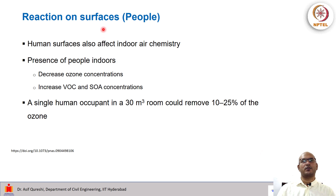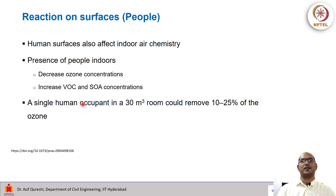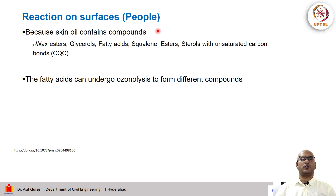Since we are discussing reactions on surfaces, we must also consider reactions on people, as we also present a large surface area and do influence indoor air chemistry. The presence of people indoors has been shown to decrease ozone concentration and increase VOC and secondary organic aerosol concentrations. A single human occupant in a typical 30 square meter room can remove almost 10 to 25 percent of the ozone. Reactions on human skin occur because skin oil contains a suite of compounds such as esters, glycerols, fatty acids, squalene, wax esters, and sterols with unsaturated carbon bonds, which undergo ozonolysis to form different compounds.